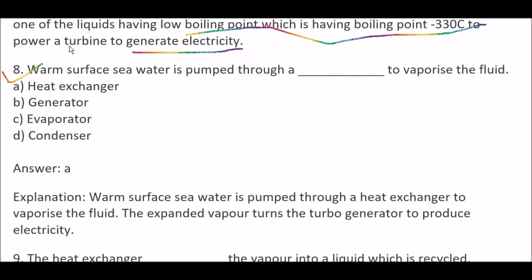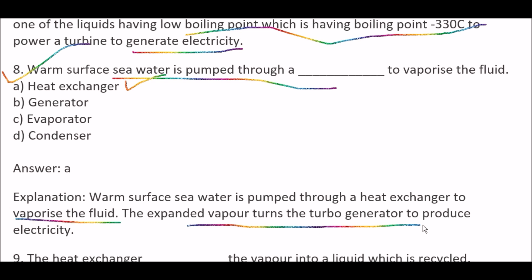Next question: Warm surface sea water is pumped through a blank to vaporize the fluid — Option A, heat exchanger; Option B, generator; Option C, evaporator; Option D, condenser. Right answer is Option A, heat exchanger. Warm surface sea water is pumped through a heat exchanger to vaporize the fluid, and the expanded vapor turns the turbo-generator to produce electricity.